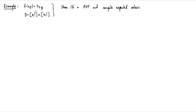For this example, we're given a function f(x,y) equals 4 times x times y on a domain. This is just a square domain, [0,1] cross [0,1].